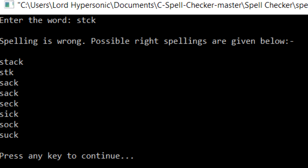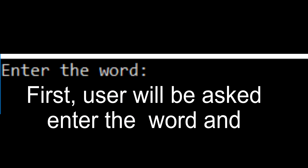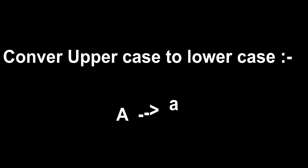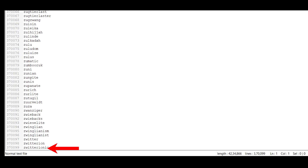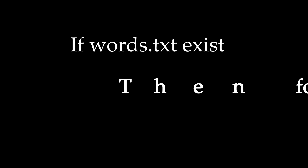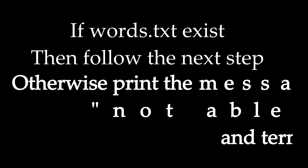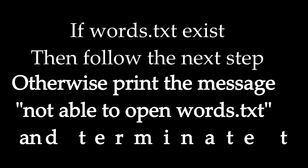Following are the possible correct spellings. Now let us see how the program works. First, the user will be asked to enter the word, and if there is any uppercase alphabet, it will be converted to lowercase. Now check the existence of words.txt, a text file which contains each and every word of the English language. You can find the download link in the description. If words.txt exists, follow the next step; otherwise, print the message 'not able to open words.txt' and terminate the program.